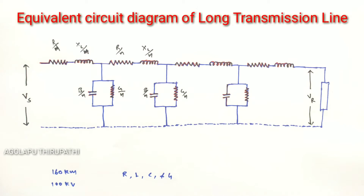If this assumption of lumped line constants is applied to long transmission lines, there will be serious errors introduced in the line performance calculations, because the line length is more than 160 kilometers. Therefore, in long transmission line performance calculations, we have to consider the line constants as uniformly distributed throughout the entire length of the transmission line to get reasonable accuracy.